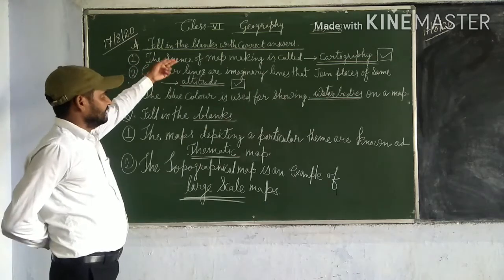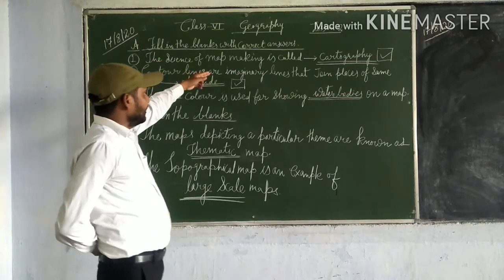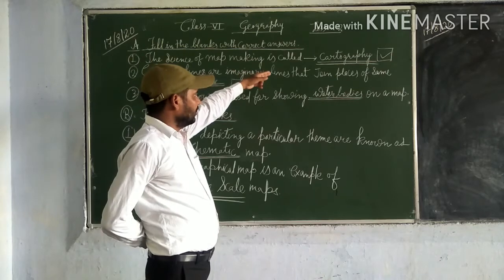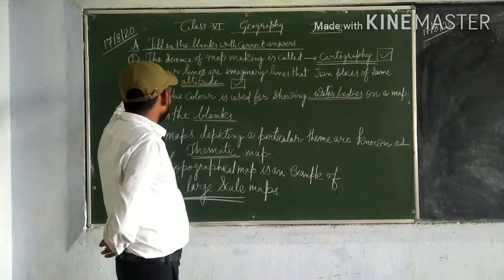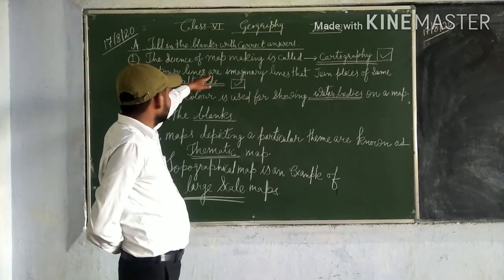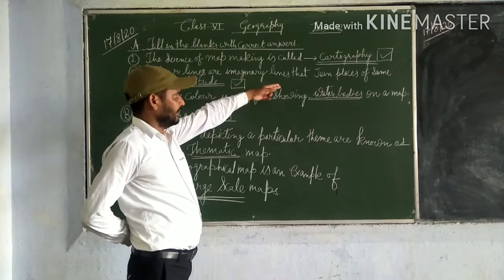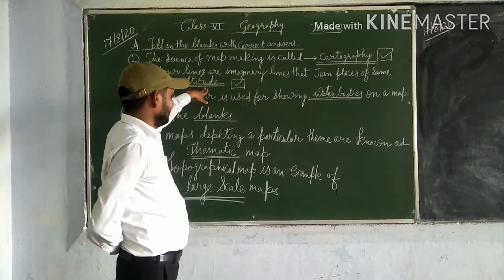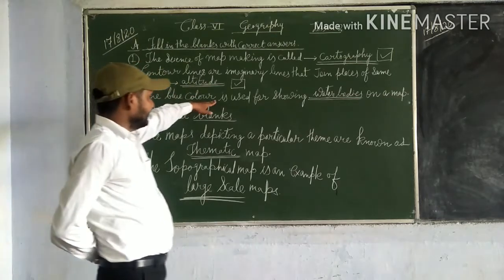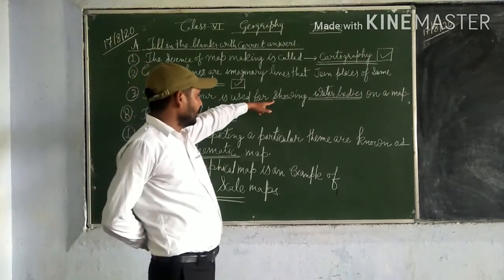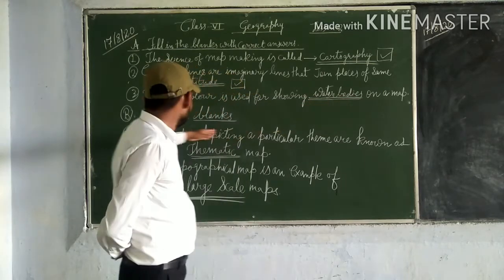Friendly friends, with correct answers. The science of map making is called Cartography. Contour lines are imaginary lines that join places of the same altitude. The blue color is used for showing water bodies on a map.